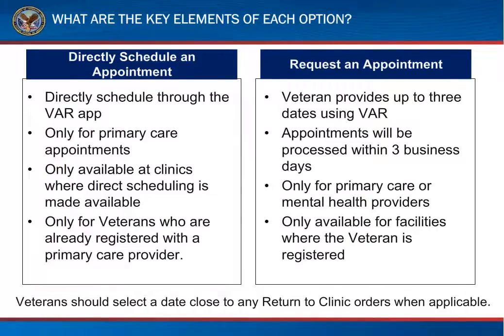Let's take a moment to discuss the difference between directly scheduling an appointment and requesting an appointment. Directly scheduling an appointment means that veterans will be able to pick a date and time for their appointment based on the availability of their primary care provider and then actually book the appointment themselves. The other option in VAR is the ability to request appointments for primary care and mental health providers. Veterans can select up to three days that work in their schedule and submit the request in VAR. Schedulers will review the request and then work to process it to meet the veteran's preference within three business days. If schedulers are unable to meet the preferred dates, they will contact the veteran to find alternative times.